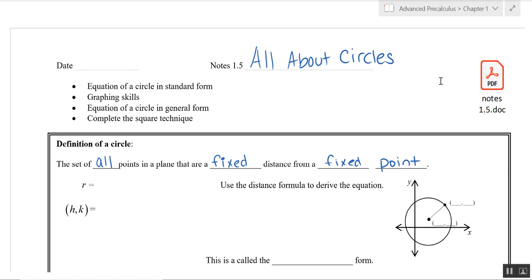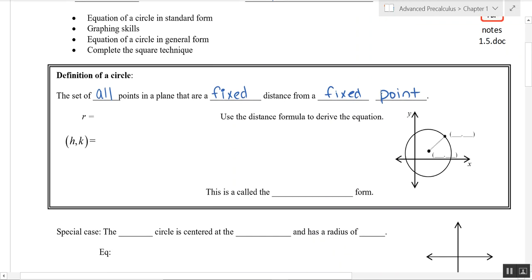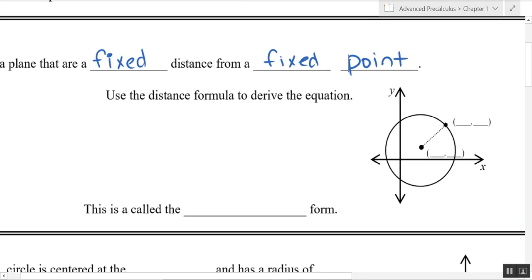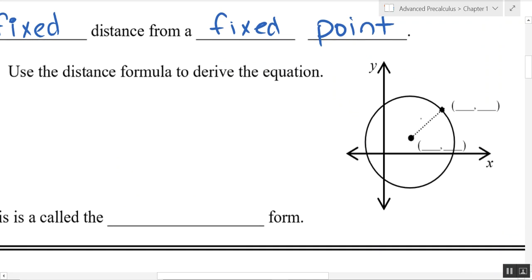Alright, section 1.5 in notes is all about circles, so we're going to talk first about the definition of a circle. The way we make a circle is essentially to collect all of the points that are a fixed distance from the center, and that distance we're talking about is that radius in the middle.